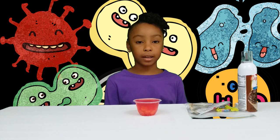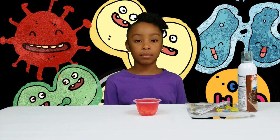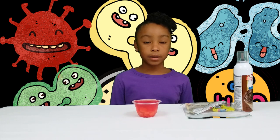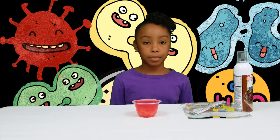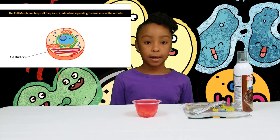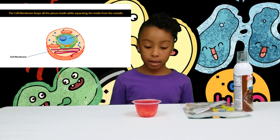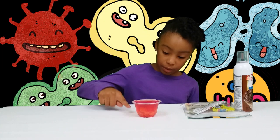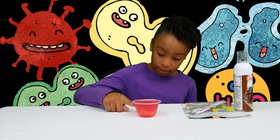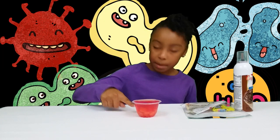We will learn about the nine major parts of the animal cell. The first thing we're going to talk about is the cell membrane. The cell membrane keeps everything on the inside while separating the inside from the outside. This plastic cup acts as the cell membrane.